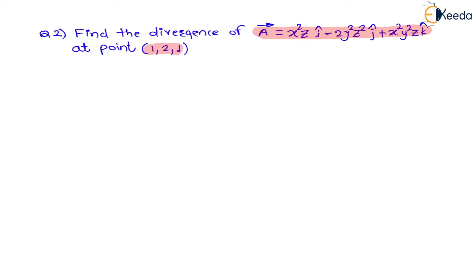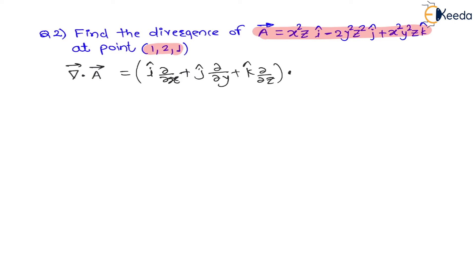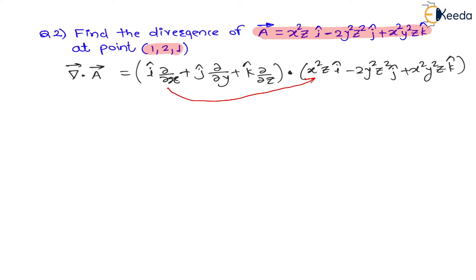How to find divergence? The del operator is î(∂/∂x) plus ĵ(∂/∂y) plus k̂(∂/∂z), dot product with vector a. Vector a is x²z·î minus 2y²z²·ĵ plus x²y²z·k̂. In the dot product the coefficients get multiplied: ∂/∂x multiplies x²z, ∂/∂y multiplies -2y²z², and ∂/∂z multiplies x²y²z, and all multiplications are added.